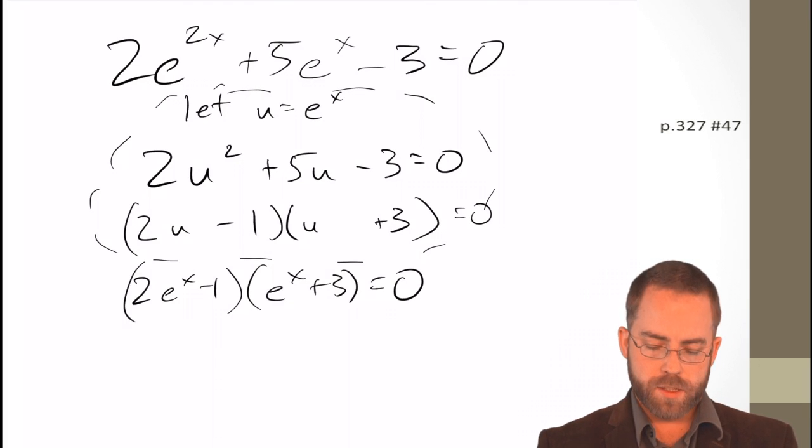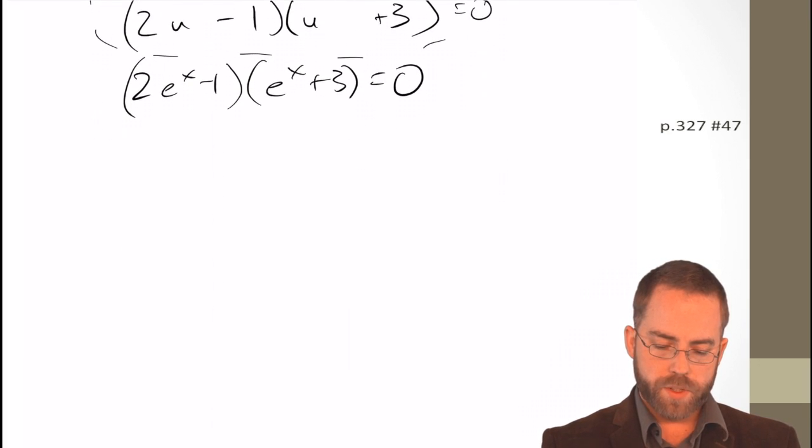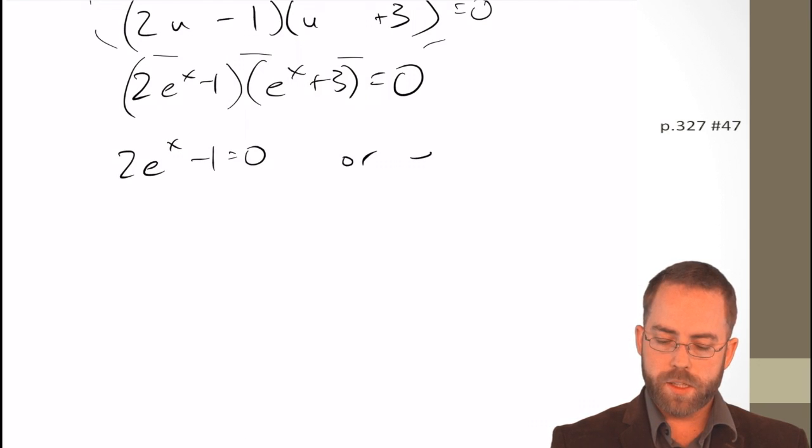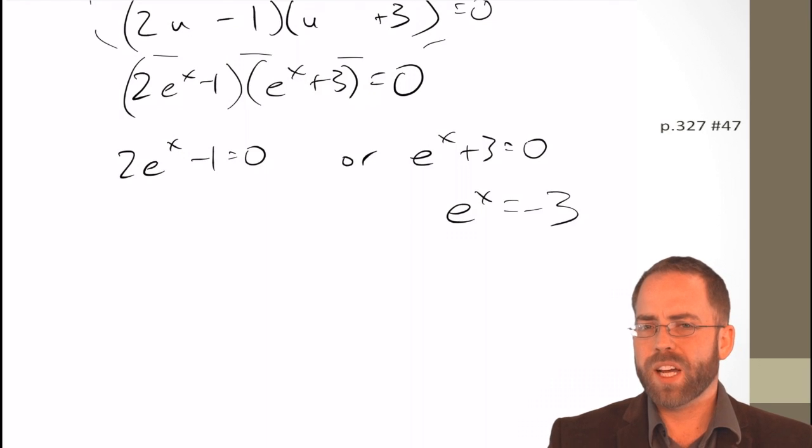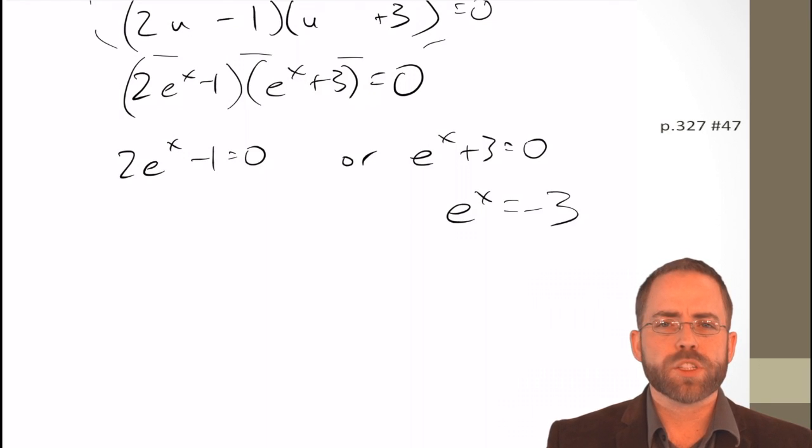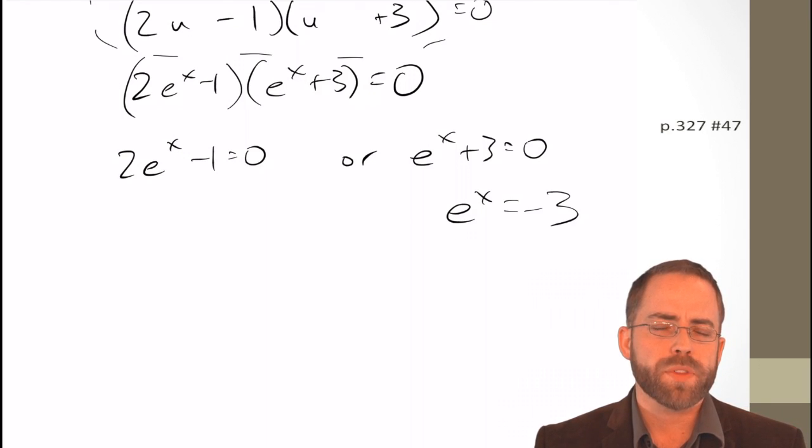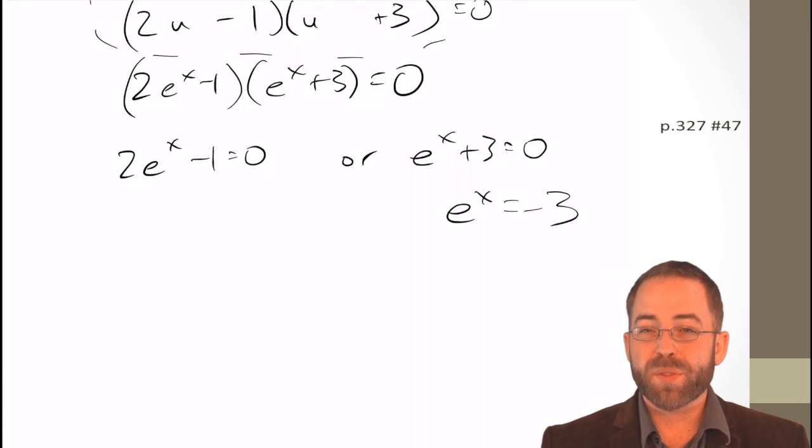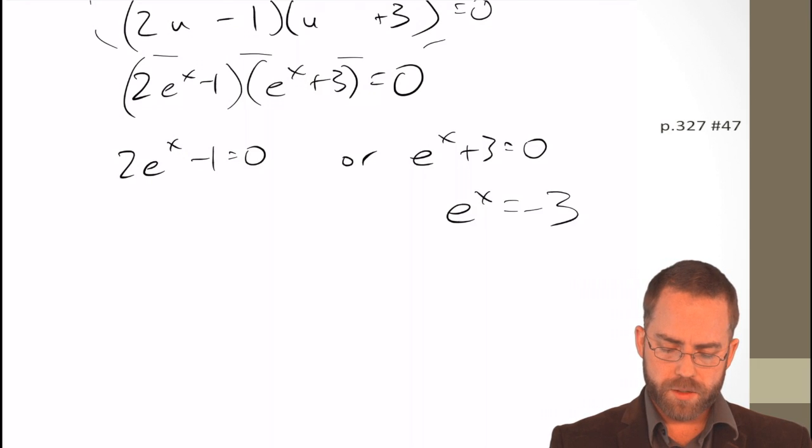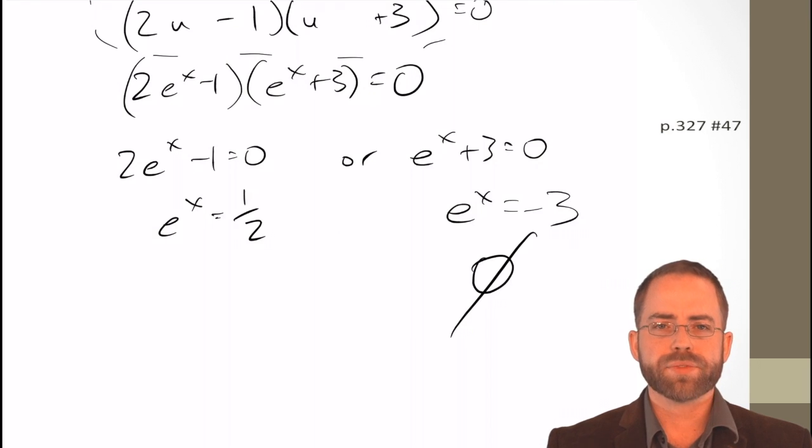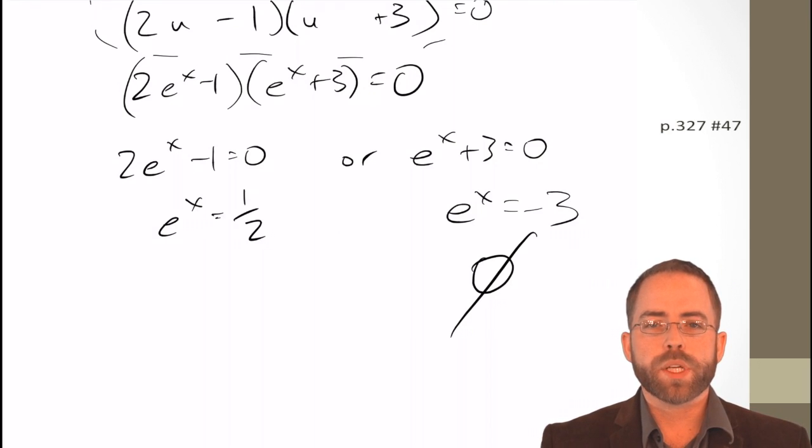So, we say either 2 e to the x minus 1 equals 0 or e to the x plus 3 equals 0. So, e to the x equals negative 3 doesn't work that way. There's no exponent that you can put on a positive number that will make it go negative. Negative exponents make fractions. Positive exponents make it bigger. This is not going to work. There's no solution over there.